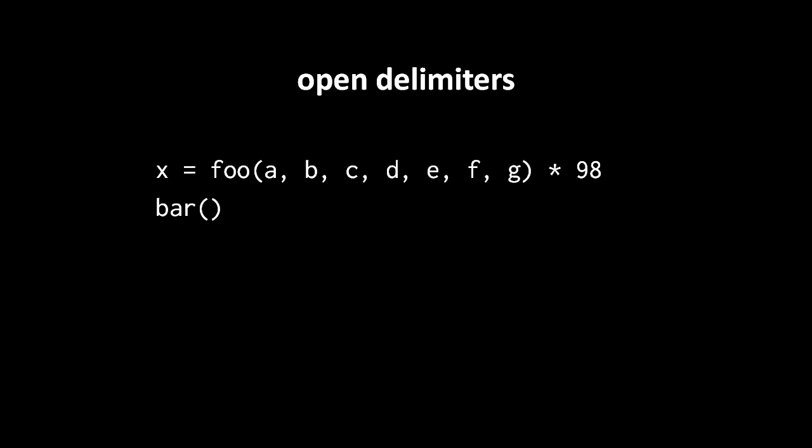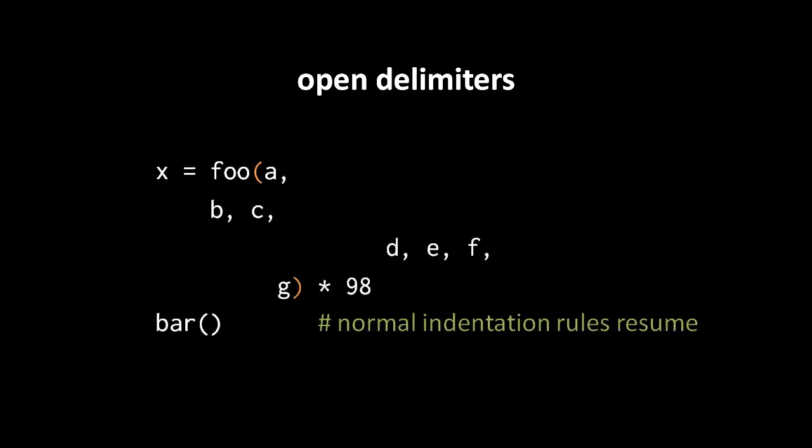So here for example, if we have this line x equals and then this long complicated call to foo with many arguments, well we can take what's in the parentheses there and spread it onto the succeeding lines however we wish. Only when Python encounters the matching closing delimiter, the end parenthesis here, do the normal indentation rules resume.